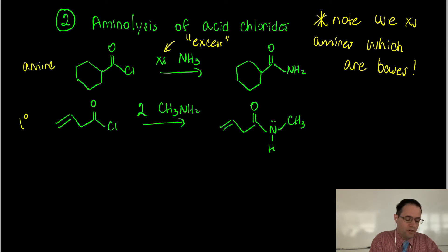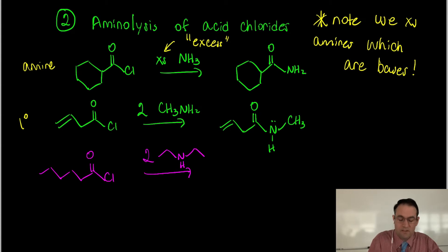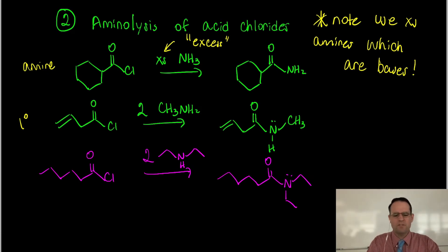With a secondary amine - if we have an acid chloride and add two equivalents or excess of diethylamine, what we get is an amide that has an ethyl group and another ethyl group on the nitrogen atom of the amide. Those are just some examples of aminolysis reactions.